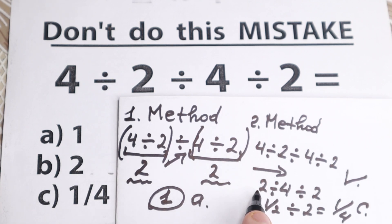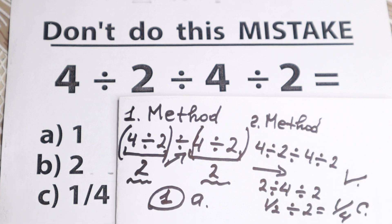4 dividing by 2 is 2. 2 dividing by 4 is 1 half. And the last step, dividing by 2, 1 fourth. Really interesting, tricky problem.